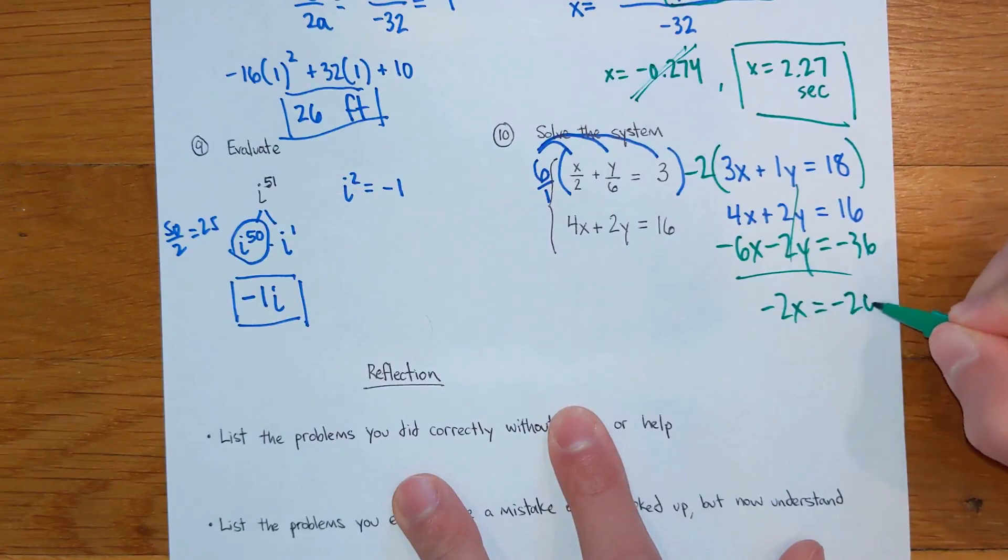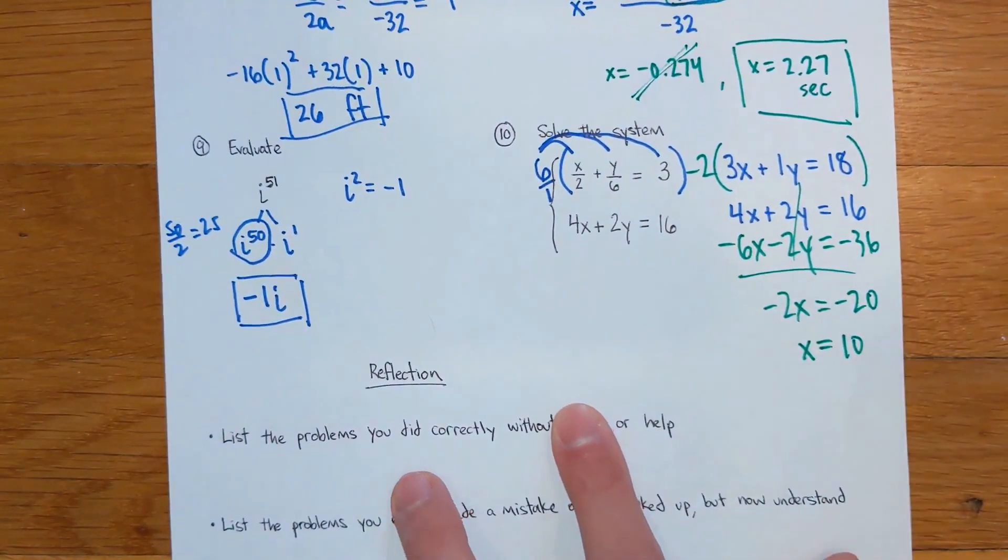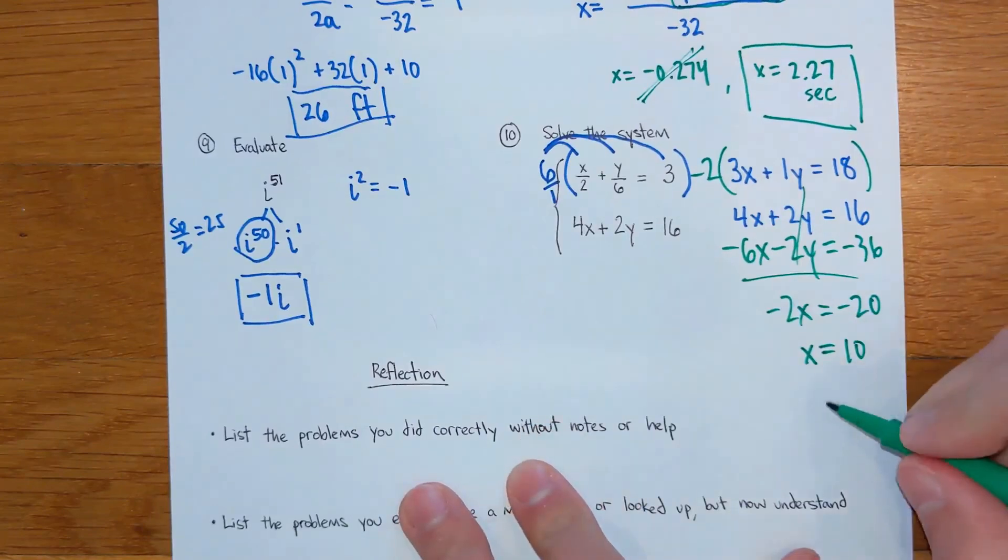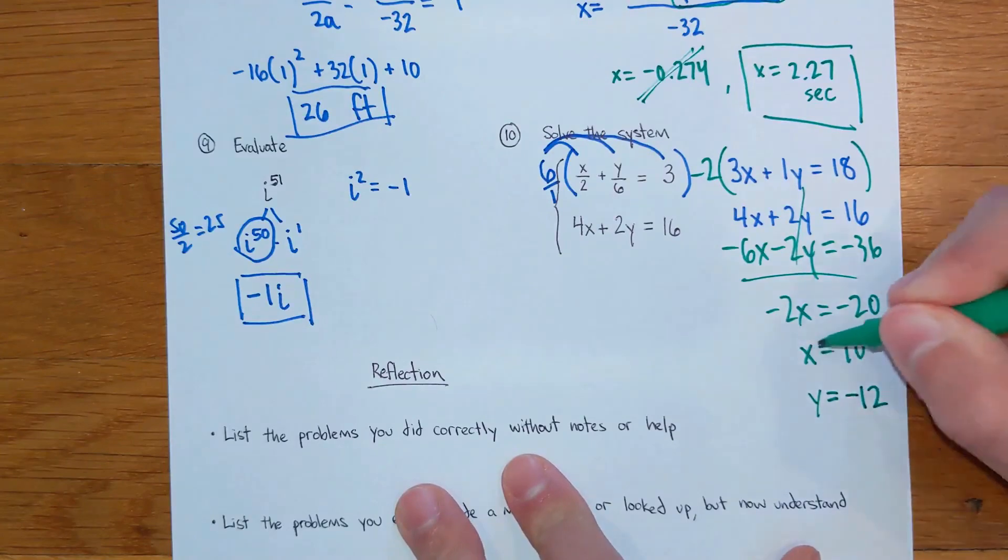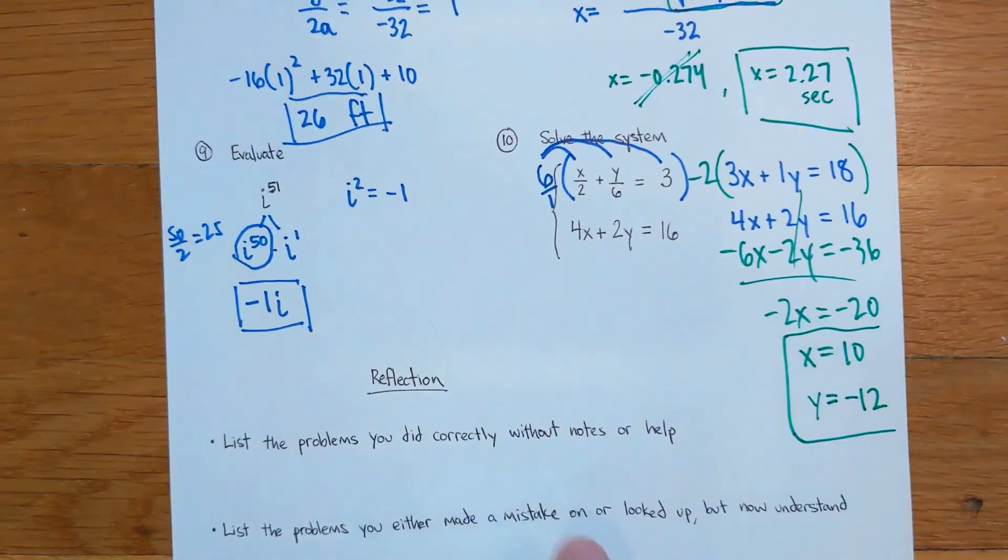I got negative 2x equals negative 20. Looks like x is going to be a 10. And if you plug x back in and get y, you should get y equals, I believe it is a negative 12. So that is going to be our solution.